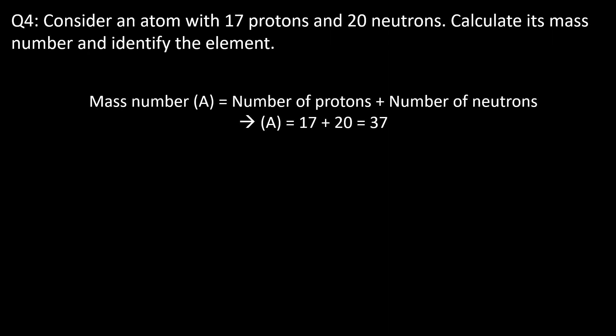The atomic number is 17, so we know it has 17 protons. It also has 20 neutrons, so by adding the number of neutrons and protons we get the mass number. 17 plus 20 is 37, and this is the mass number. The element also has 17 protons, so we simply look this up on the periodic table and we'll find it is chlorine.